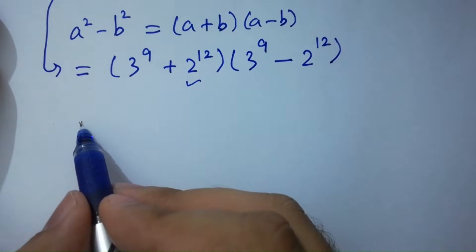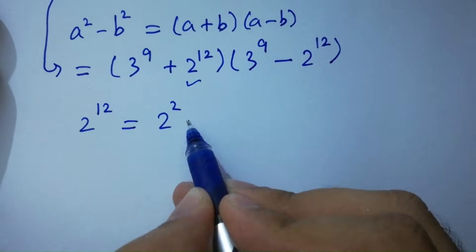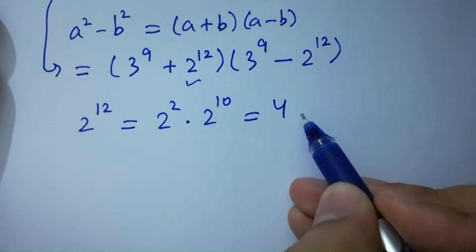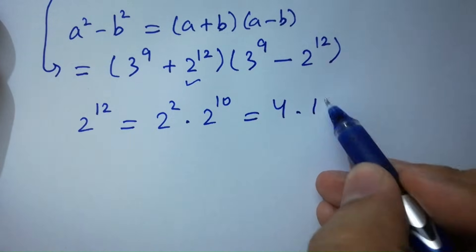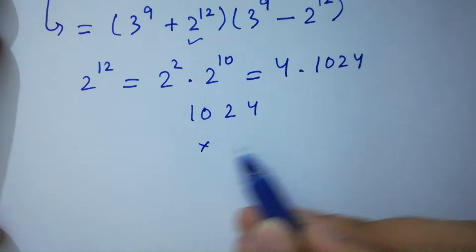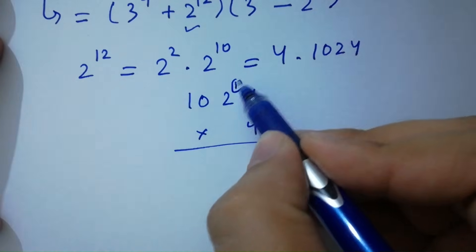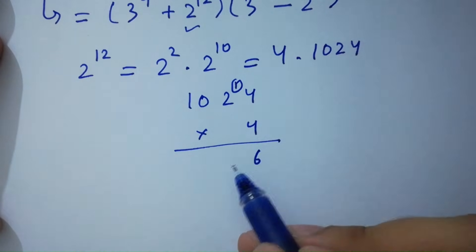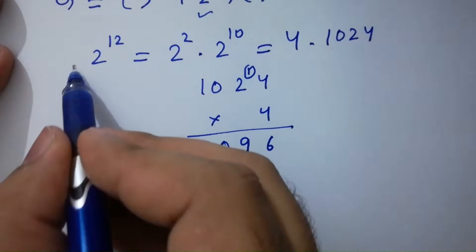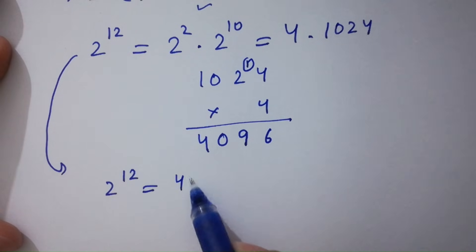First, 2 to the power 12 equals 2 squared times 2 to the power 10 — that is 10 plus 2 gives 12. 2 times 2 is 4, and 4 times 2 to the power 10, which is 1024. So 1024 times 4: 4 times 4 is 16, carry 1; 4 times 2 is 8, plus 1 is 9; 4 times 0 is 0; 4 times 1 is 4. So 2 to the power 12 equals 4096.